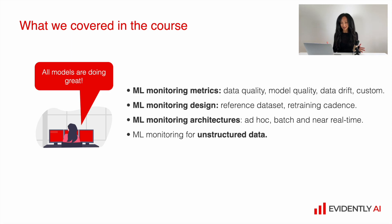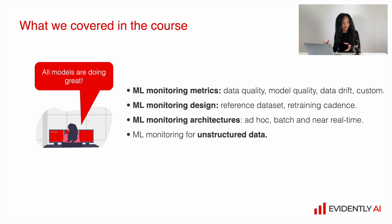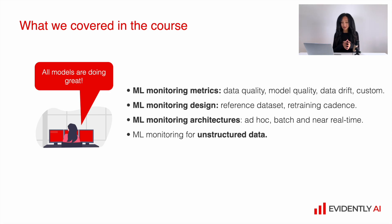Together with metrics, we discussed machine learning monitoring design, because there are a lot of options and things we need to decide on before we build actual monitoring. For instance, we discussed what a reference dataset is, how it differs from the golden set data, and many aspects of how you can actually build this reference dataset and how many reference datasets you might want to have. We also discussed the connection between model retraining and monitoring and the retraining cadence. We also discussed machine learning monitoring architectures, starting from ad hoc reports and test suites to batch and real-time machine learning monitoring, and slightly touched on machine learning monitoring for unstructured data.